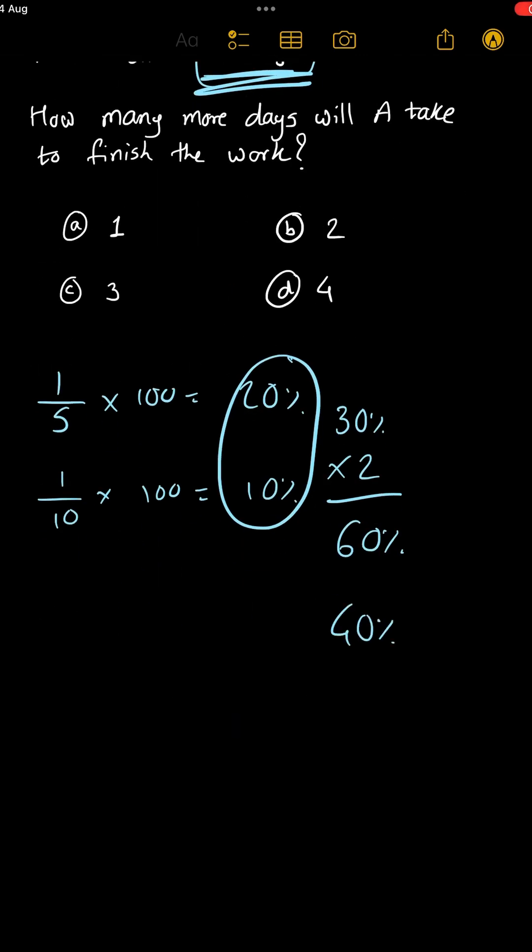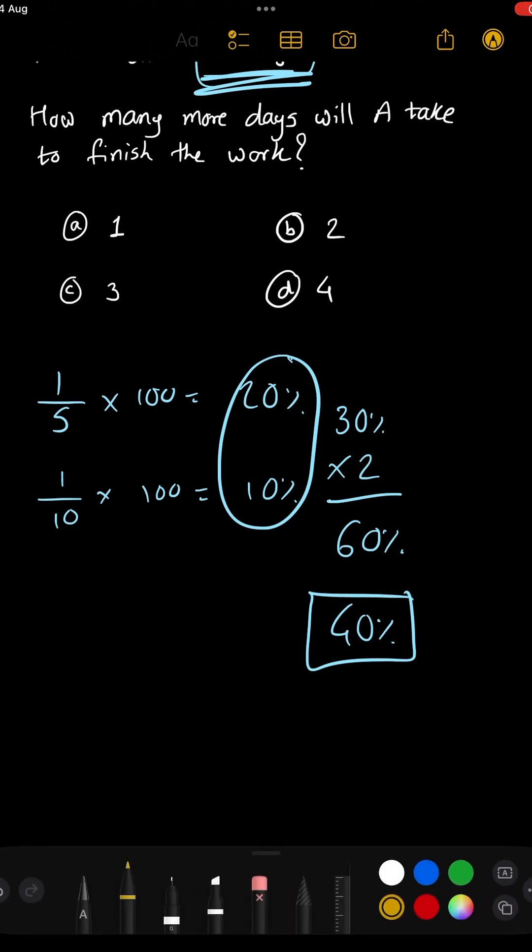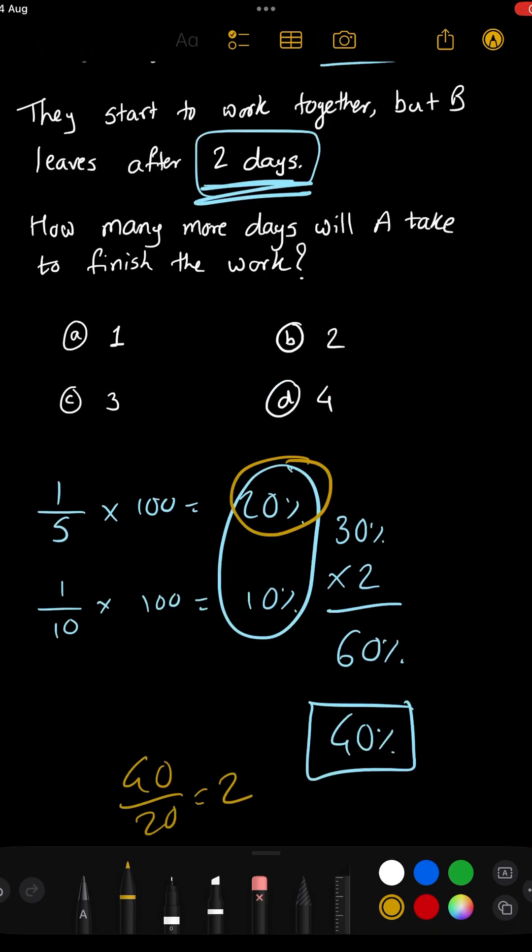Only 40% is remaining now. Now A has to do this alone, but we already know that A can do 20% work every day. That means to finish 40% he will need 2 more days, which is option 2.